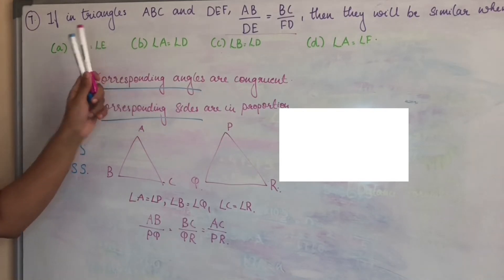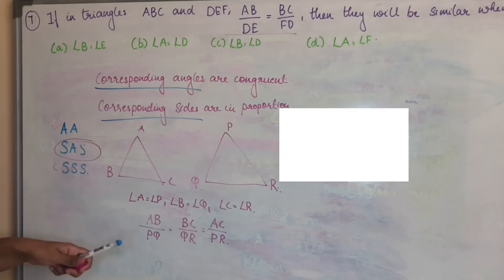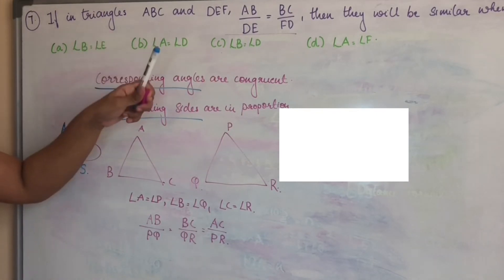Options are angles. So we have this criteria using, which is SAS criteria. That means included angle equal, two triangles are similar.